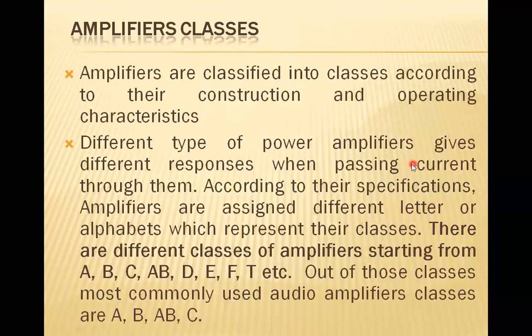Different types of power amplifiers give different responses when passing current through them. According to their specifications, amplifiers are assigned different letters or alphabets which represent their classes. There are different classes of amplifiers starting from A, B, C, AB, D, E, F, T, etc.